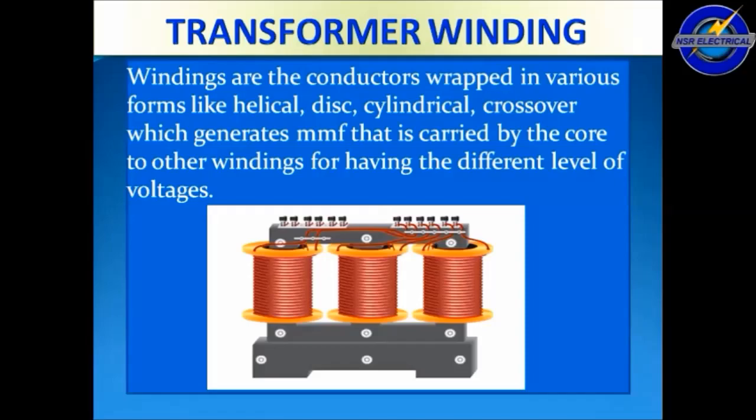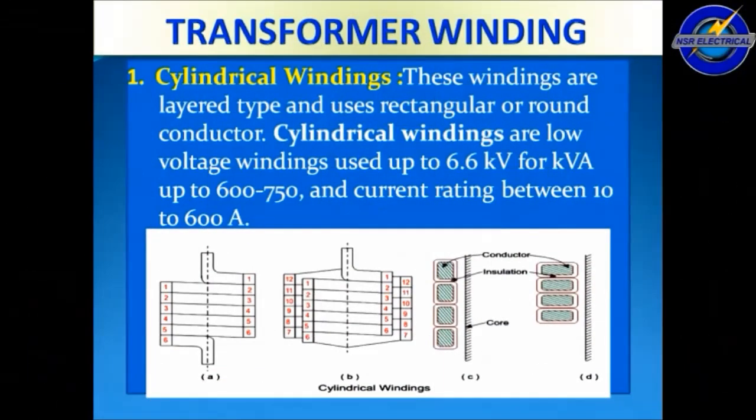This is the introduction part for basic purpose. Next we see the transformer winding types. The first one is cylindrical winding. These windings are layered type and use rectangular or round conductors. Cylindrical windings are low voltage windings used up to 6.6 kV, for kVA ratings up to 600 to 750, and current ratings between 10 to 600 amps.